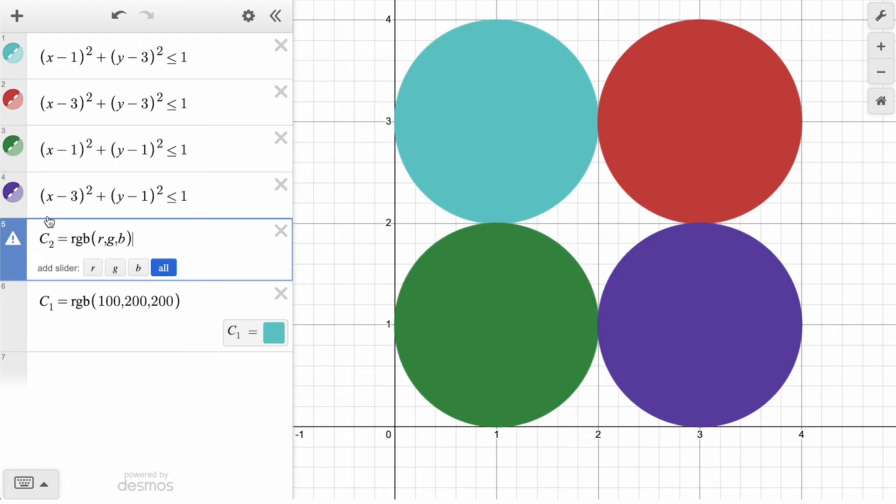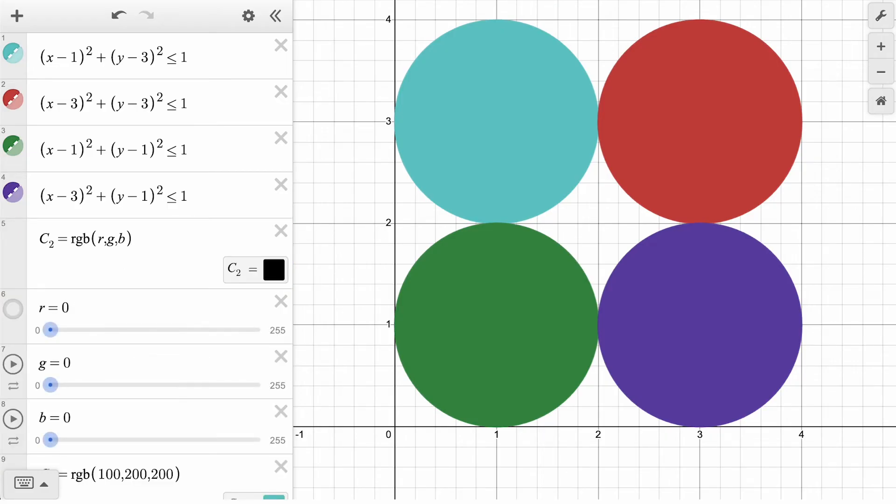Just like any variable in Desmos, we can now add sliders to adjust these values. Notice how the default intervals for each of these goes from 0 to 255, which is the standard interval for the RGB color scale. I can now adjust these sliders and see how the C2 color swatch changes.